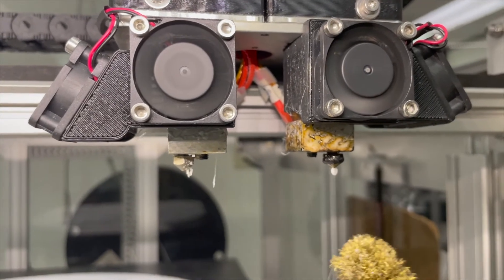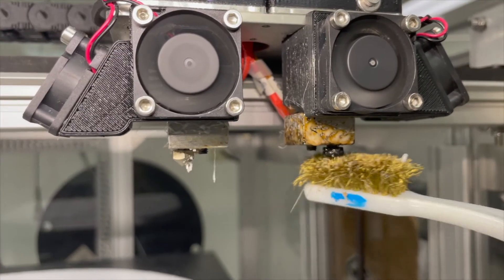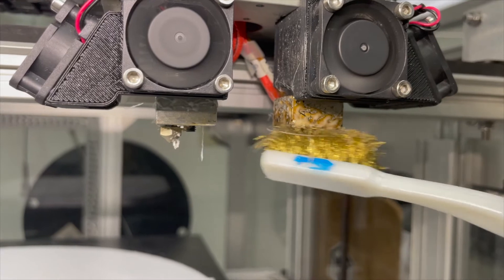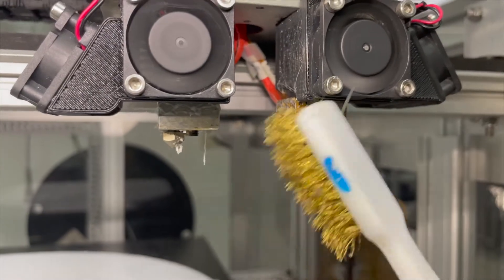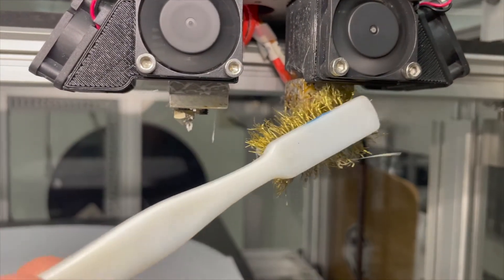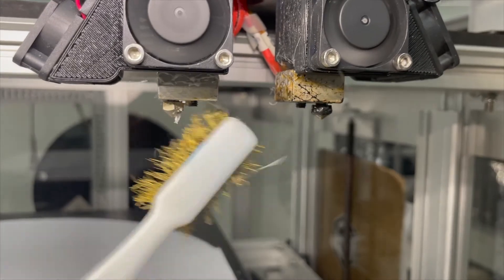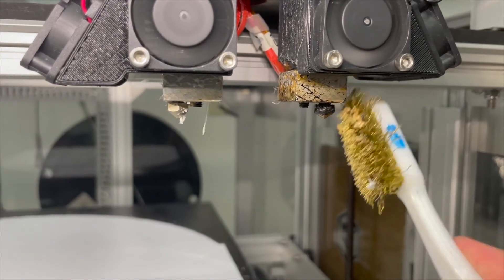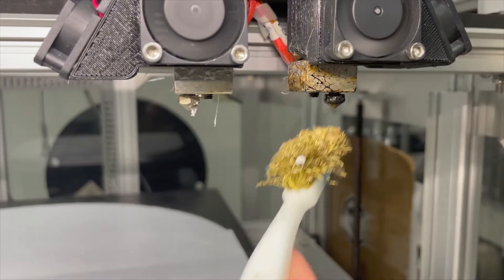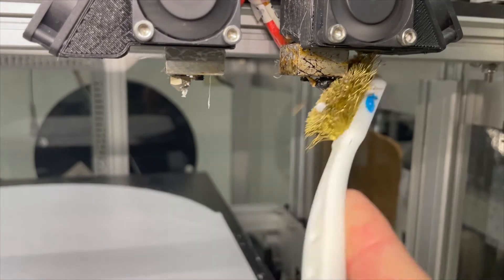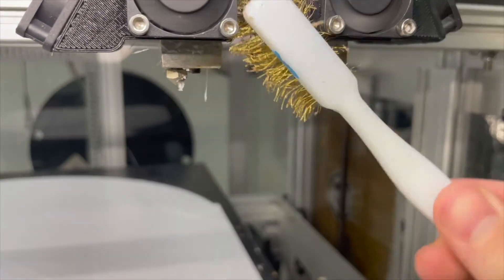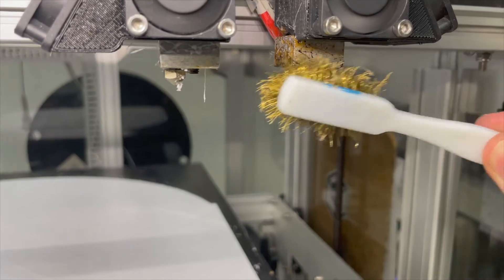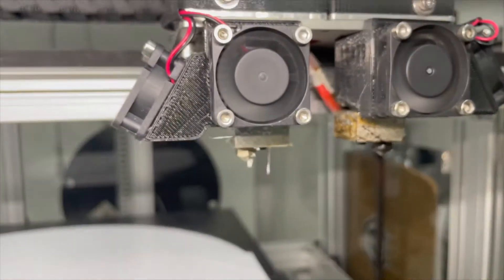So what we'll do is with the brass wire brush, we'll just come in and give this a nice scrape. It helps to engage the motors, so move the X axis a little bit, that allows you to get a little better grip. Nice and satisfying, let's do this one now.